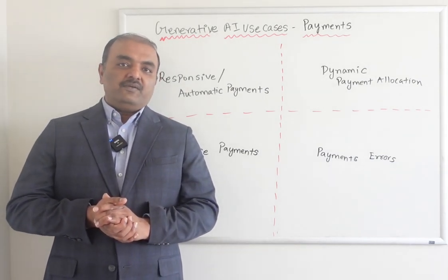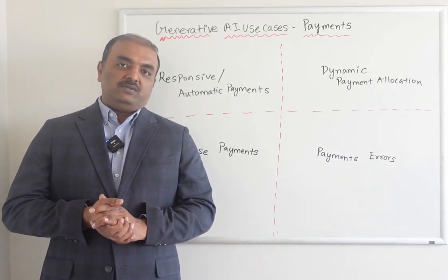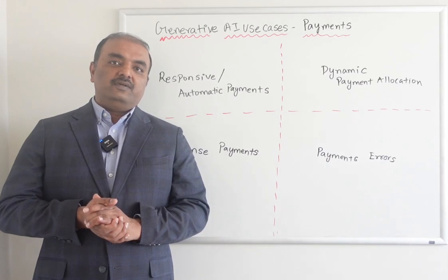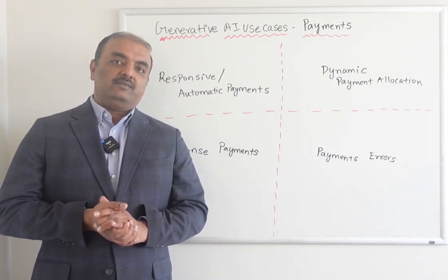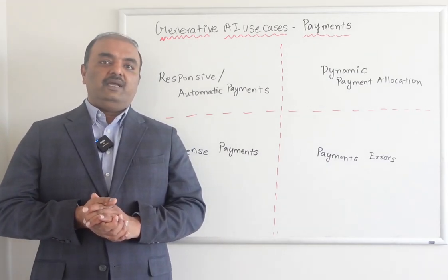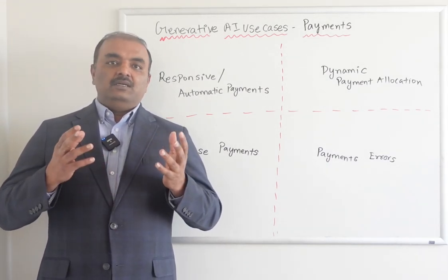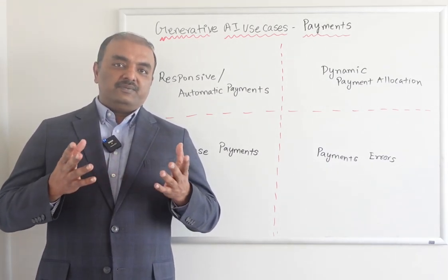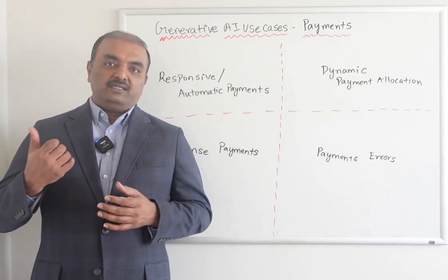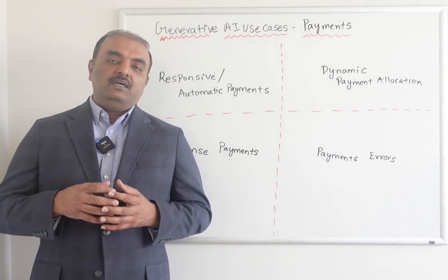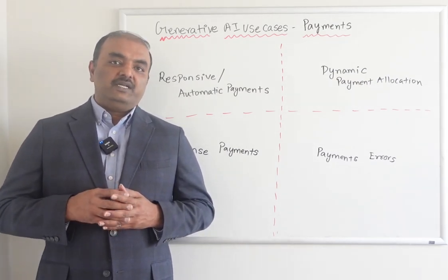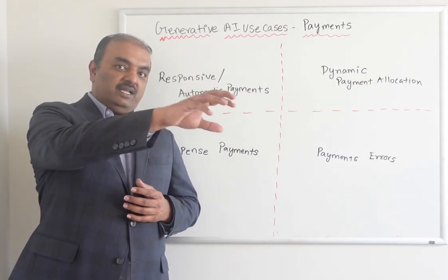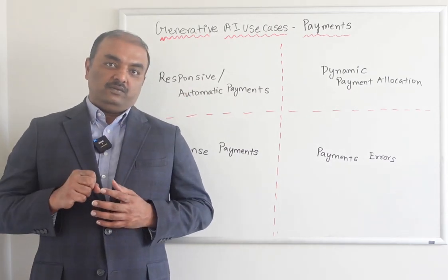Today we have two types of payments. One is responsive, where you send the invoice to the customer and the customer makes a payment by entering the details on their website or calling customer service. Whereas with Direct Debit, the insurance company directly pulls the money from the customer account.